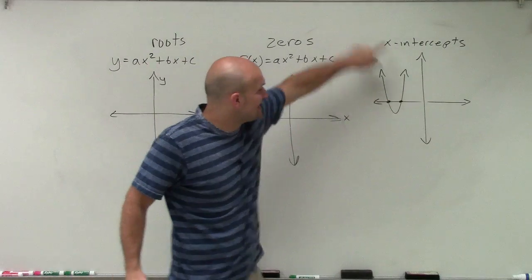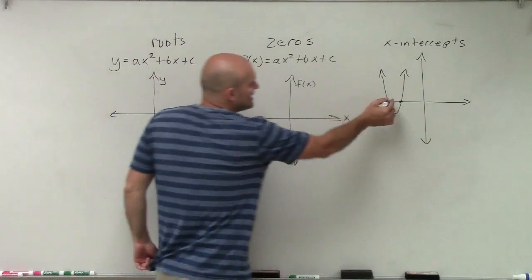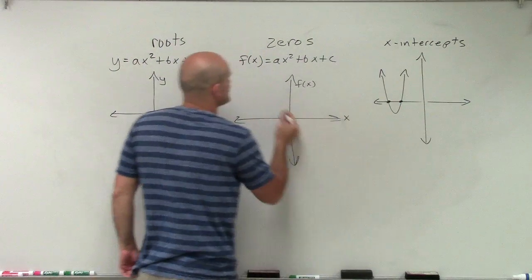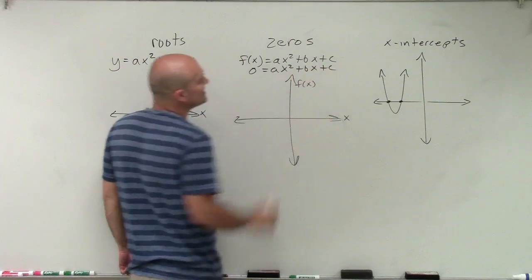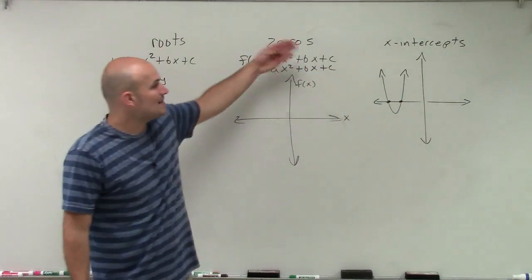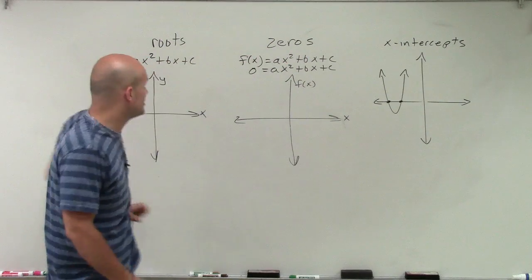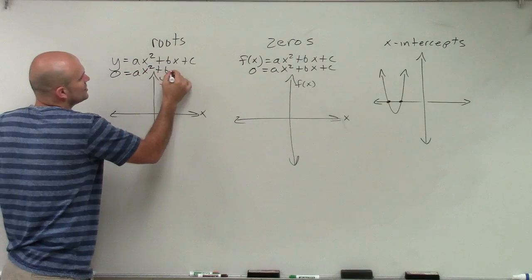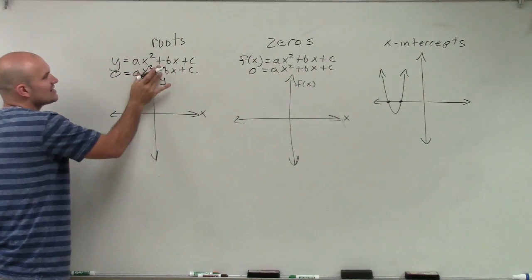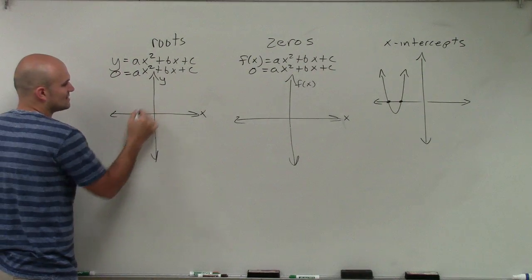When we want to find the x-intercepts, we're looking for when our y-value equals zero, or when our output value equals zero. So when I say find the zeros of the function, I'm asking you to find the values of x when our output value equals zero. When I say find the roots of the equation, I'm asking you to find the values of x when our y-coordinate equals zero. You'll see that it doesn't matter.